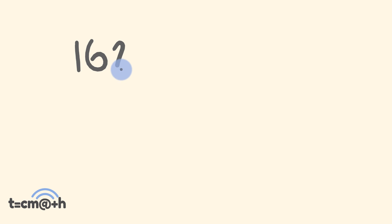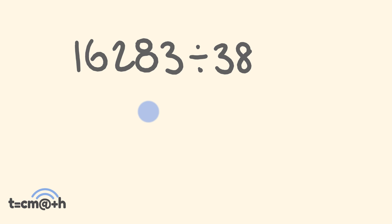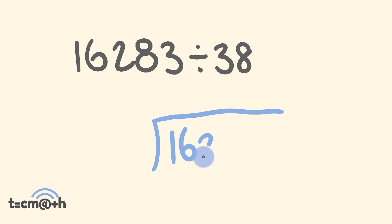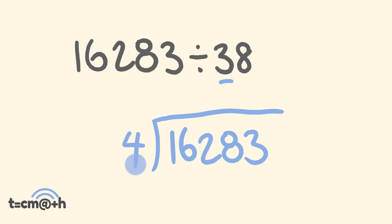Say, for instance, we wanted to get 16,283 and divide that by 38. The way we're going to do this is draw it up as standard division, going 16,283. And instead of putting 38 here, I'm going to put the closest tens number — just that first part of it, which is the four. To go from 38 up to 40, we'd have to go up two. I'm going to keep that number there; we'll be using that as we go along.